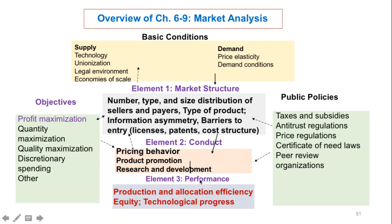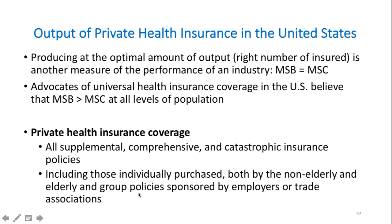In this lecture, you will learn about the performance of the insurance industry based on the level of production — specifically, how we estimate the level of production in health insurance in the United States. Producing at the optimal amount of output is a key measure of industry performance, where marginal social benefit equals marginal social cost.